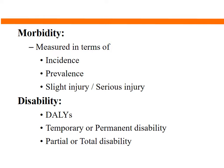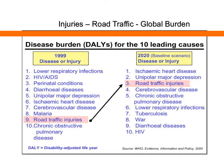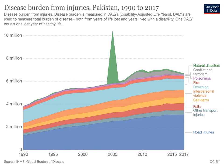Regarding the global situation, road traffic injuries account for 1.35 million deaths annually. The Global Burden of Disease study projected that road traffic injuries would rise to rank third among all causes by 2020, and it is clear we are on that trajectory.